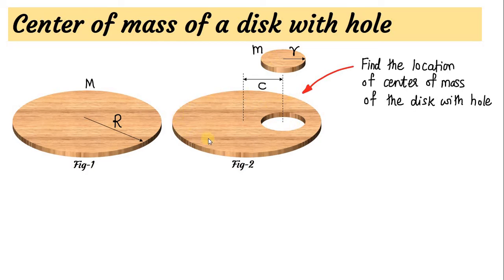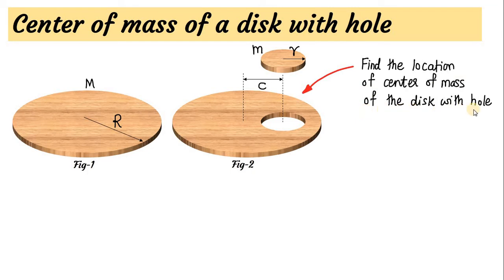Now, what will happen to the centre of mass? Initially, the centre of mass of this disc was located at the geometric centre because of its perfectly symmetrical shape. But after making the hole, the symmetry of the disc is disturbed. The centre of mass is no longer at the geometric centre — it will be shifted somewhere else. So we need to find the location of the centre of mass of the disc with the hole.